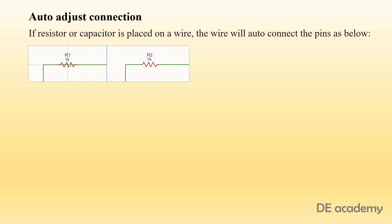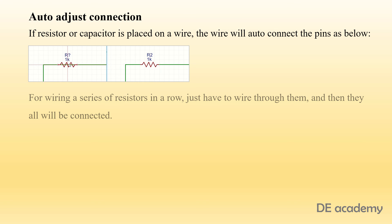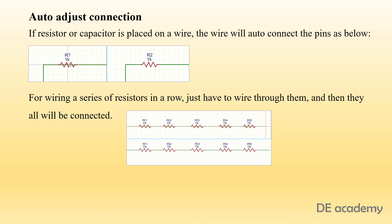One useful feature of this designing tool is auto adjust connection. If a resistor or capacitor is placed on a wire, the wire will auto connect the pins as shown in the figure. In the case of a series resistors connection, we just have to wire through them and they will all be connected automatically.